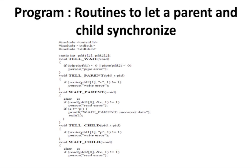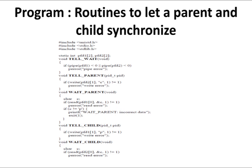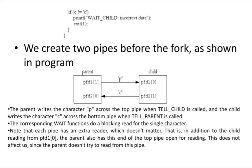To synchronize parent and child, we use functions: tell_parent, tell_child, wait_parent, and wait_child. These let a parent and child synchronize properly — tell_child tells the child the parent is ready, tell_parent tells the parent the child is ready, and the wait functions block until the other side signals.